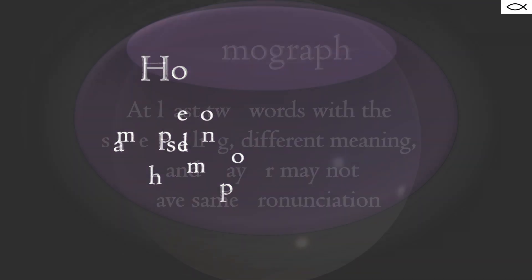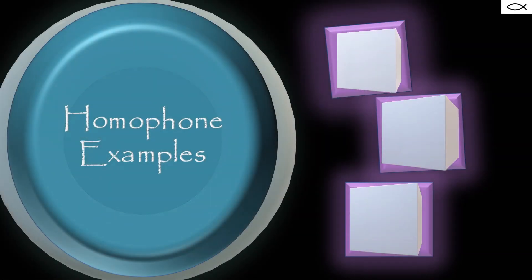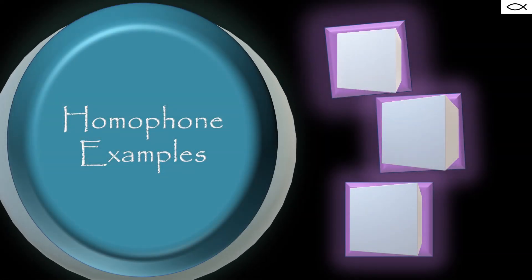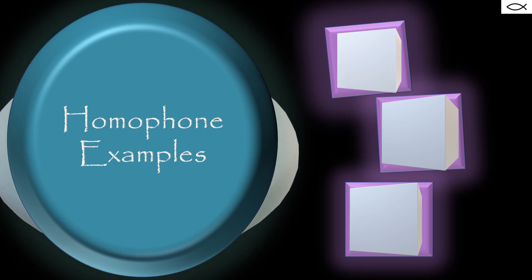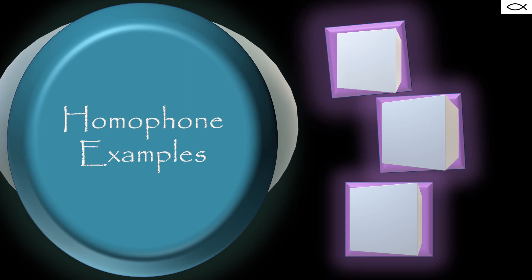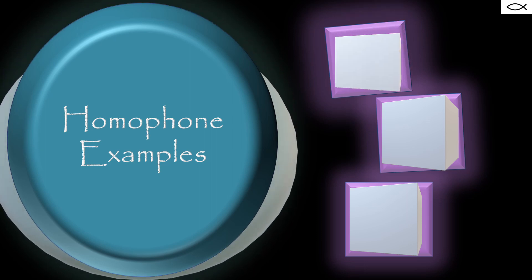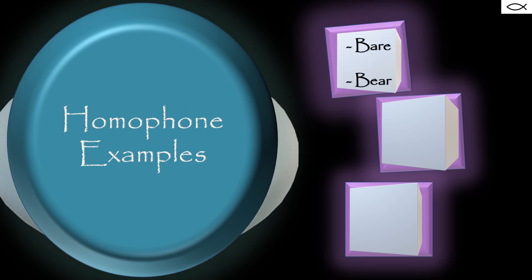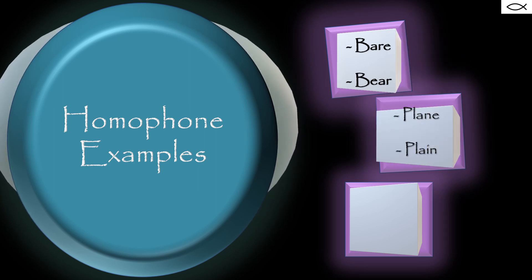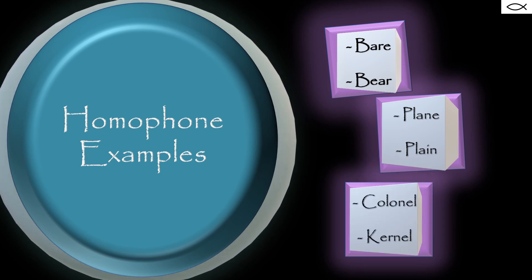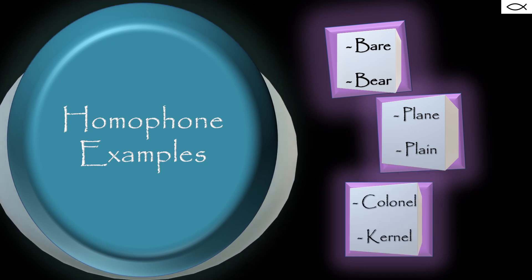Now, let's look at some examples. Remember, all of the following homophone examples are going to have different spelling, different meaning, but the same pronunciation: bear and bare, plain and plane, kernel and colonel.